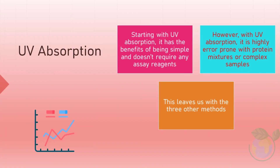UV Absorption. Starting with UV absorption, it has the benefits of being simple and doesn't require any assay reagents. However, it is highly error-prone with protein mixtures or complex samples, such as UV cell lysates. This leaves us with the three other methods.